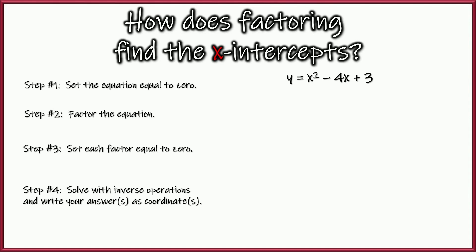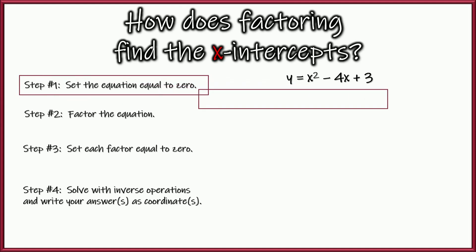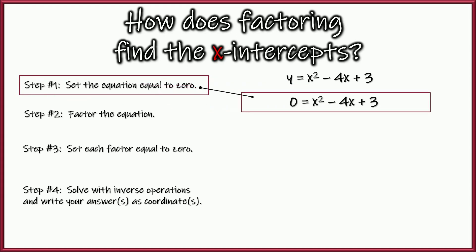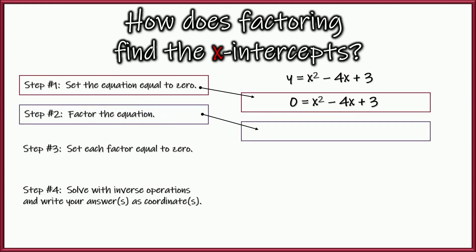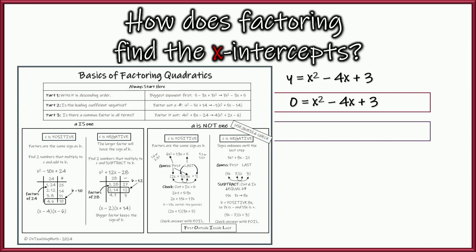We'll do x squared minus 4x plus 3. It's true we already know the x-intercepts, but practicing with a known answer is a good way to build confidence. Step one: set it equal to zero — replace y with zero. Step two: factor the equation. This is where people can get into trouble, so let's use our reference sheet. If you didn't download one yet, pause the video — it's linked in the description.